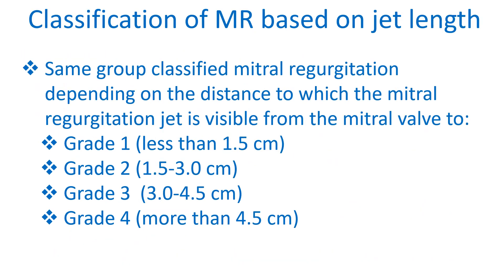The same group classified mitral regurgitation depending on the distance to which the mitral regurgitation jet is visible from the mitral valve: Grade 1 less than 1.5 centimeters; Grade 2: 1.5 to 3 centimeters; Grade 3: 3 to 4.5 centimeters; Grade 4: more than 4.5 centimeters.